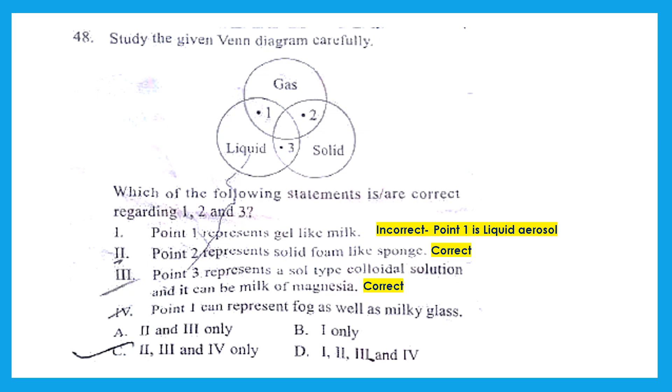Point 4, that is point 1 can represent fog as well as milky glass. Now this is incorrect because point 1 is liquid aerosol. So the right answer is option A, that is 2 and 3 only.